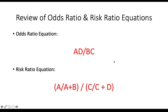Here is a review of important equations. The odds ratio equation is AD divided by BC. If you're unfamiliar with this, please refer to the mini lecture explaining the purpose of the odds ratio. The risk ratio equation is derived from the contingency table — the numerator is the relative risk of the exposed group, and the denominator is the relative risk of the unexposed group. Please refer to the mini lecture on risk ratios for more detail.